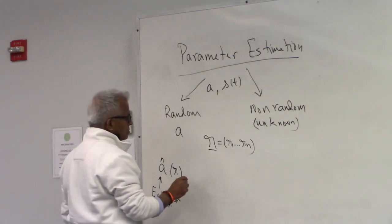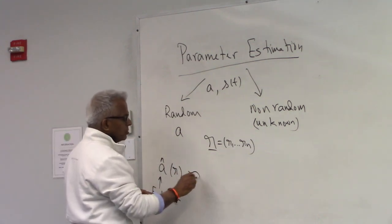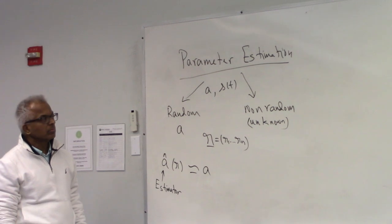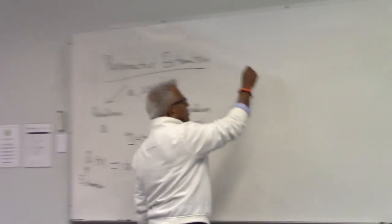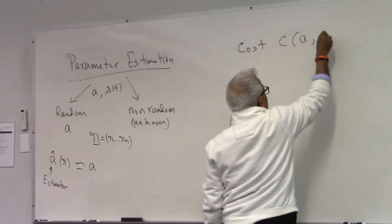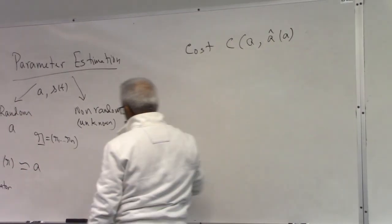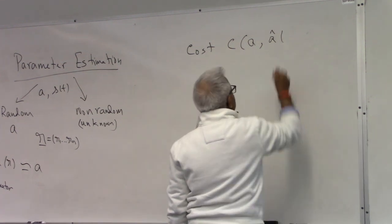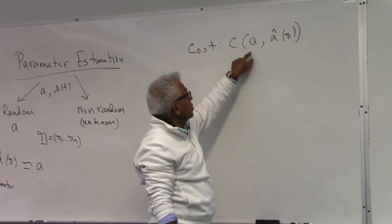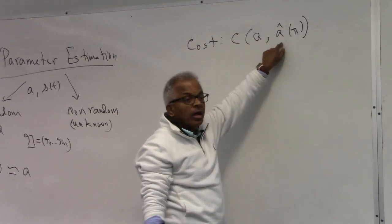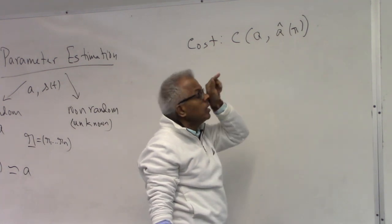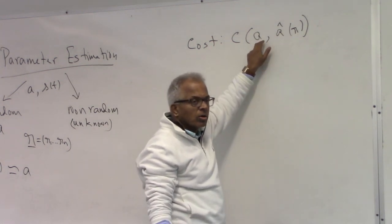Either way, what we want is for this estimator to be close to the actual value. You can take the difference as error, or you can bring in a cost. The cost is the penalty for estimating A as A-hat; it is a function of two variables — the unknown and your estimator.